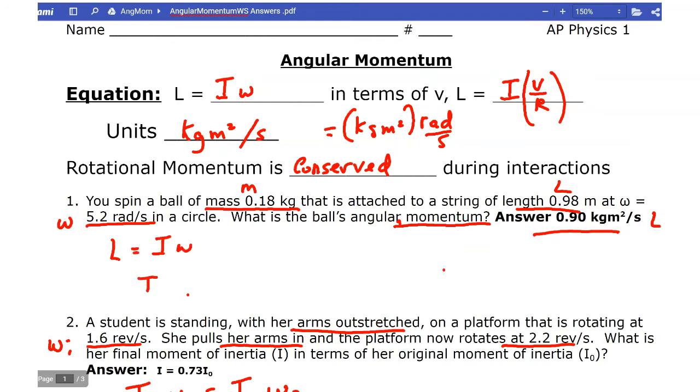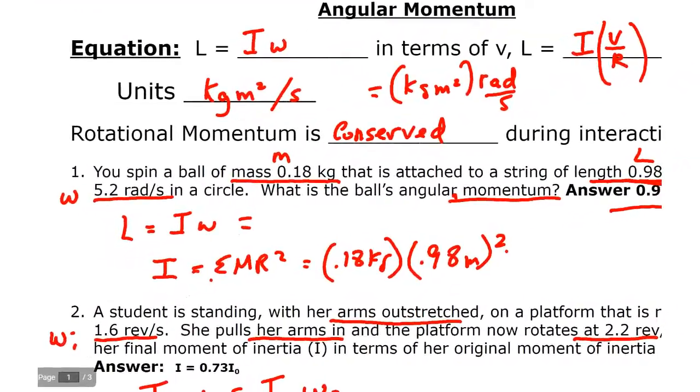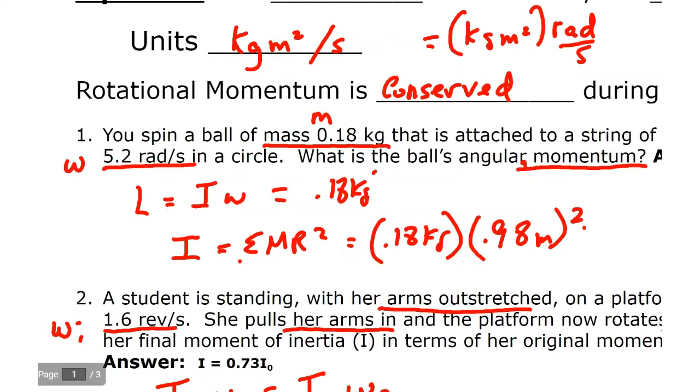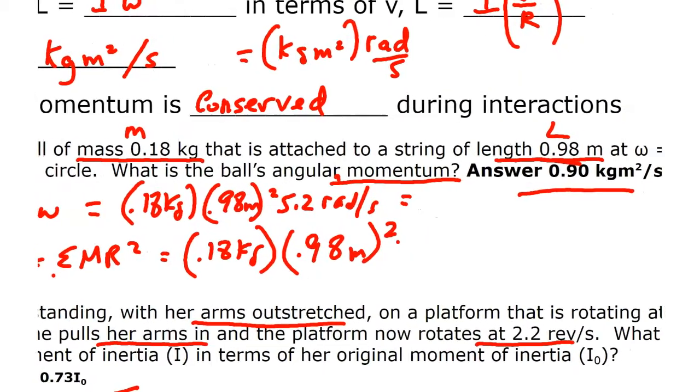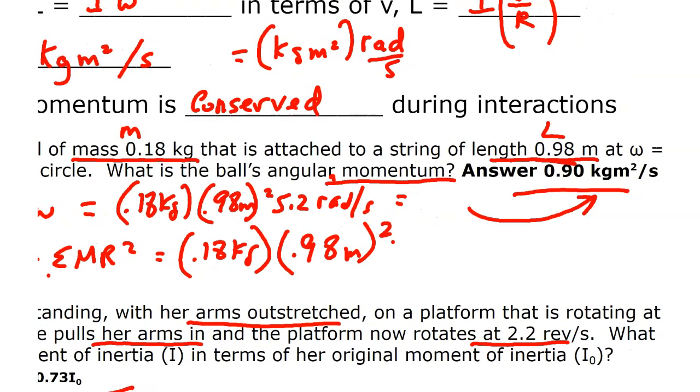So L equals Iω. Now, here's the deal. I, for a simple object, it's just the sum of all the MR squareds. So this is a simple object with a single mass and a single radius right over here, 0.98. And that gets squared, so that would be the moment of inertia. And when you bring them all together, it's M times R squared, 0.98, they gave you that, meters, that's squared, and then you multiply it by 5.2 radians per second. That's the ω, and you put it all together, and you get that angular momentum.